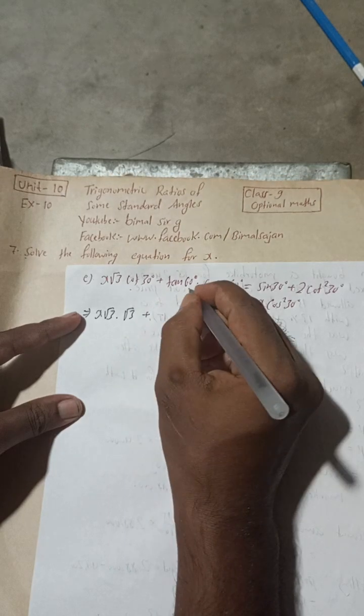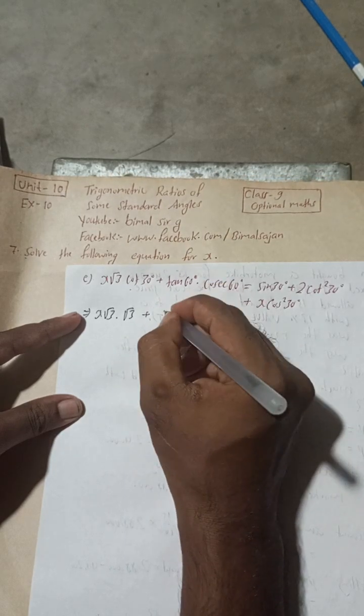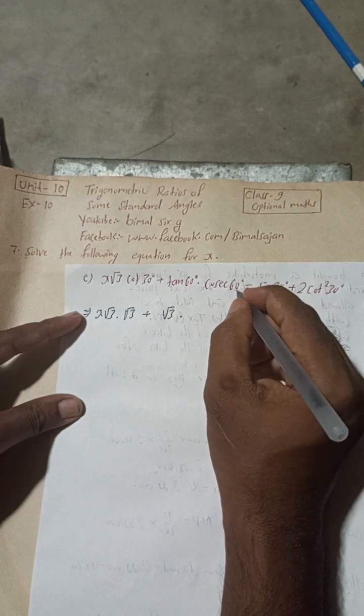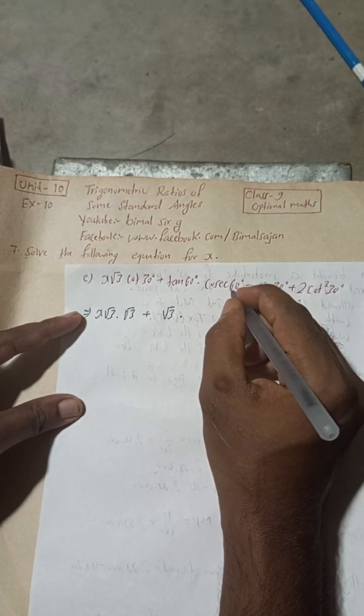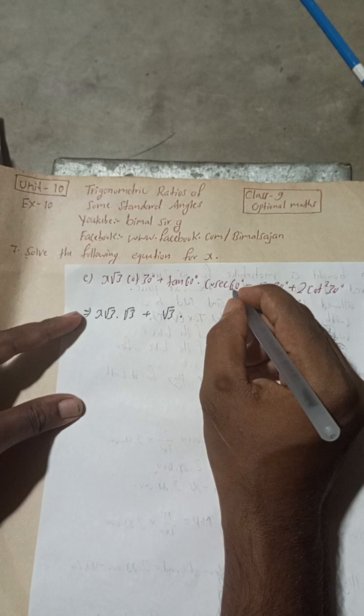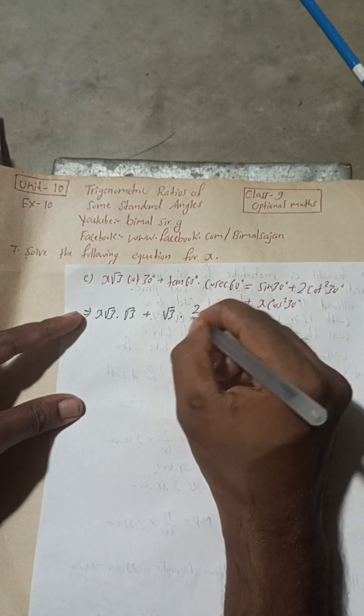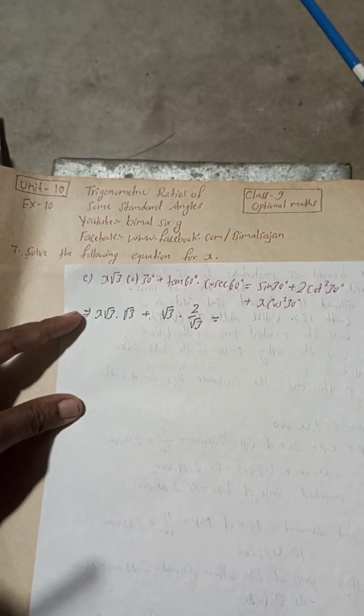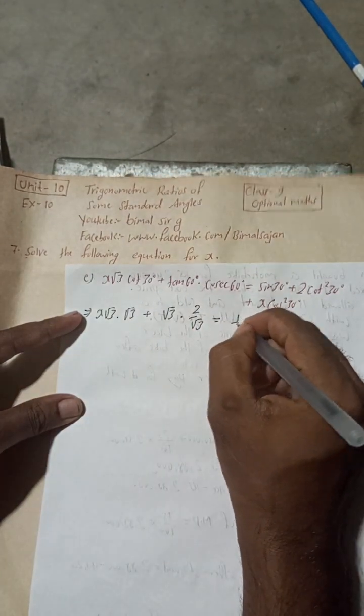Plus tan 60 value, so tan 60 value is √3 into cot 60. Sin 60 will be cosec, this you know, so sin 60 value is √3 by 2, so cot 60 is 2 by √3. This is equal to sin 30, which is equal to 1 by 2.